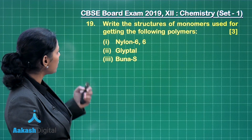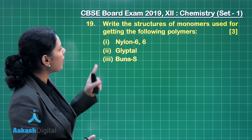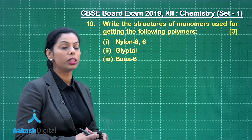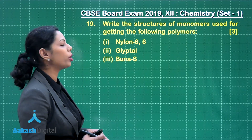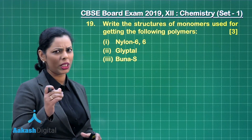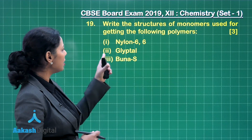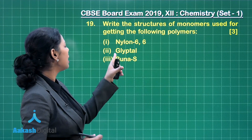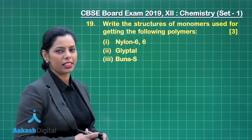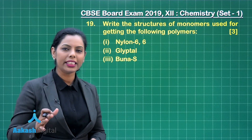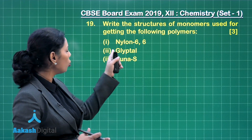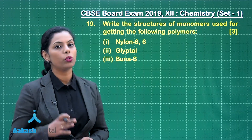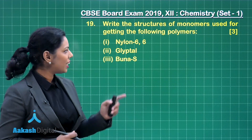Let us take the first part: write the structure of the monomers used for getting the following polymers. The polymers are Nylon 6,6, Glyptal, and Buna-S. For writing the monomers of each of these polymers, you will obtain three marks.